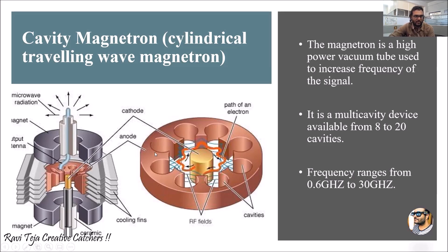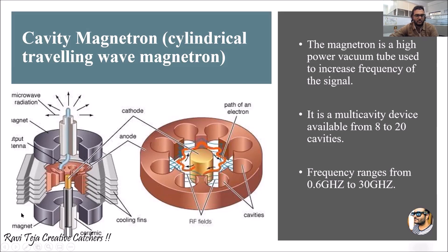This is a diagram of a cavity magnetron where you can see several cavities. This multi-cavity device is available in 8 to 20 cavities — here we see around eight cavities, and we can get these cavity magnetrons up to 20 cavities. The frequency of this cavity magnetron ranges from 0.6 GHz to 30 GHz. This is the structure of a cavity magnetron with the cavities visible.